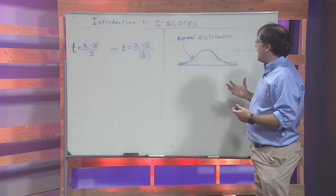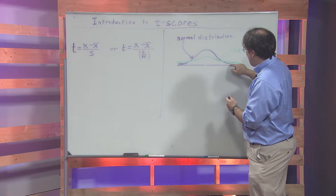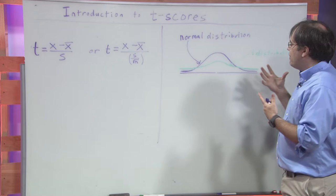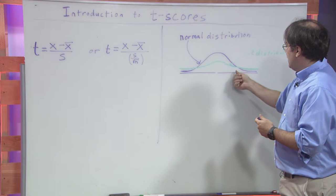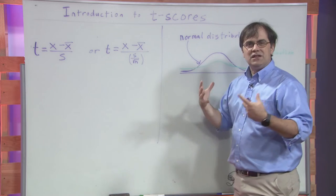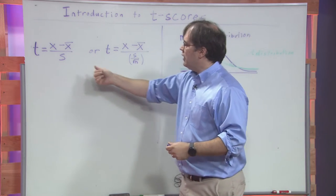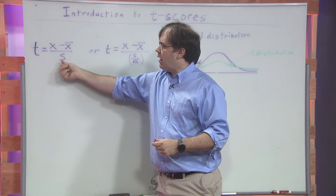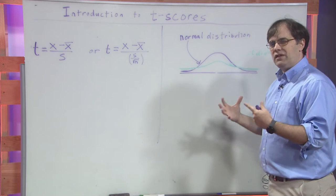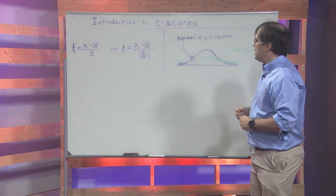It turns out that when you calculate critical values, which if you remember is the area underneath the curve here out in the tail, this critical value is going to be a little bit bigger than the z-score because you have a little bit less certainty. You don't know the population value, you only know the value of the standard deviation for the sample that you're working with. You have more uncertainty, so the critical values will be a little bit bigger.